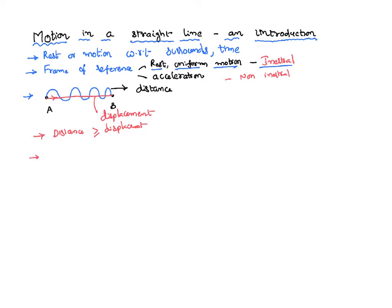Consider a scenario where you start from a position, make a circular motion, and come back to the same position of radius R. The distance travelled by the body — the actual path — is the circumference of the circle, which is 2πR. But displacement in this case is zero, because you started from one position and came back to the same position.